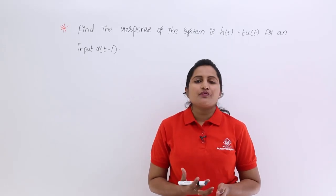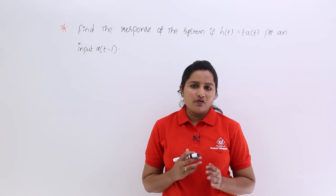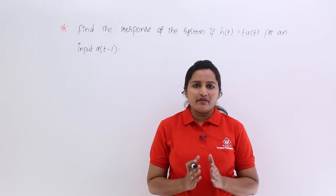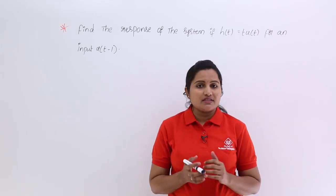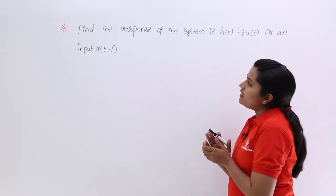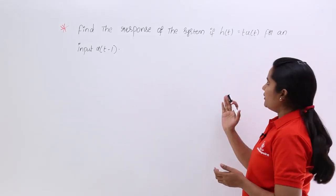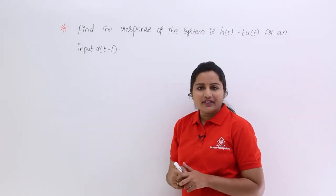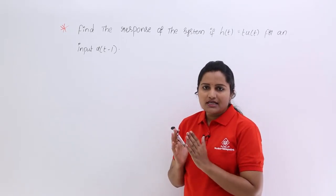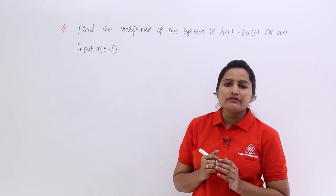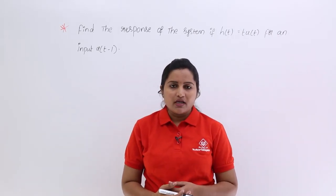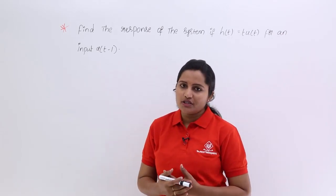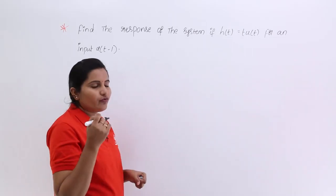In this video we are going to discuss one more problem related to convolution of two signals. In the last class we discussed the convolution of unit step and ramp, and here we are going to deal with the same type of problem. The problem asks us to find the response of the system, and as established at the beginning of signals and systems, response is nothing but the output of the system, while excitation is the input.